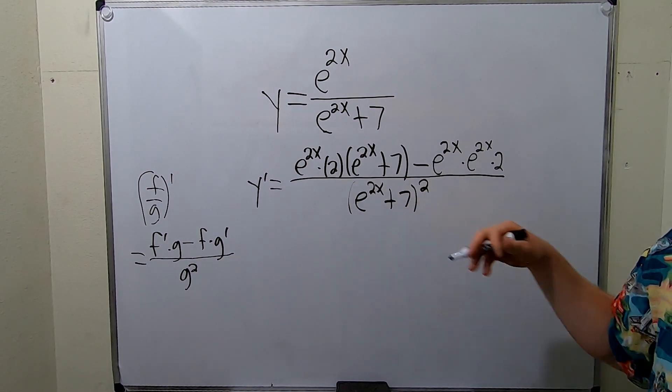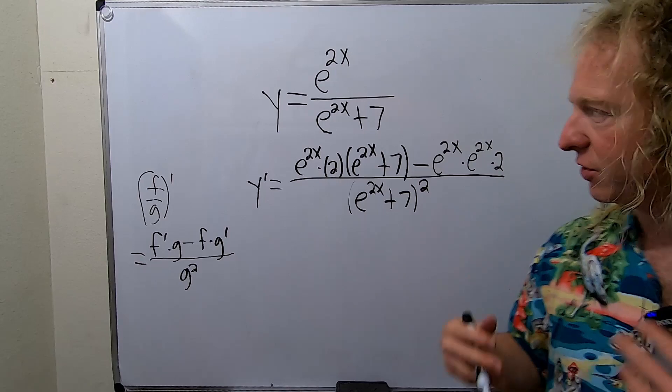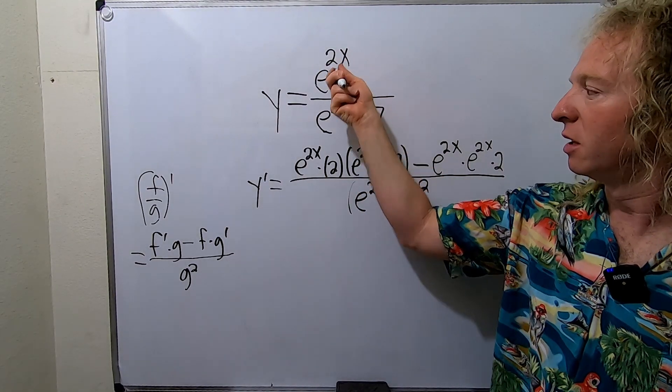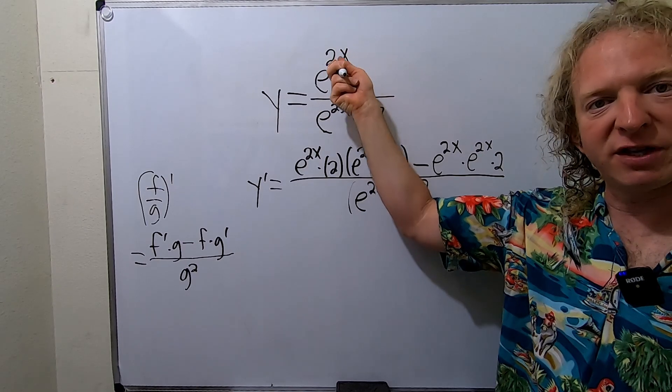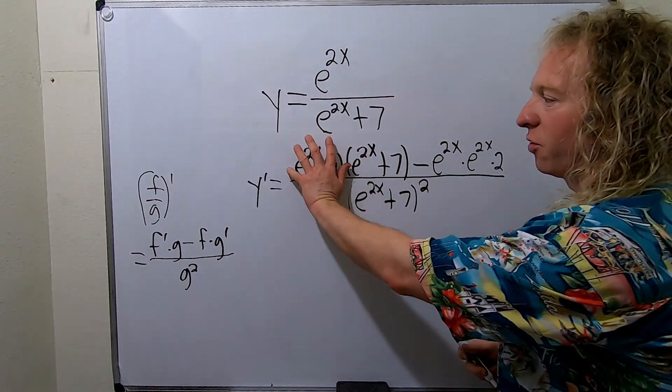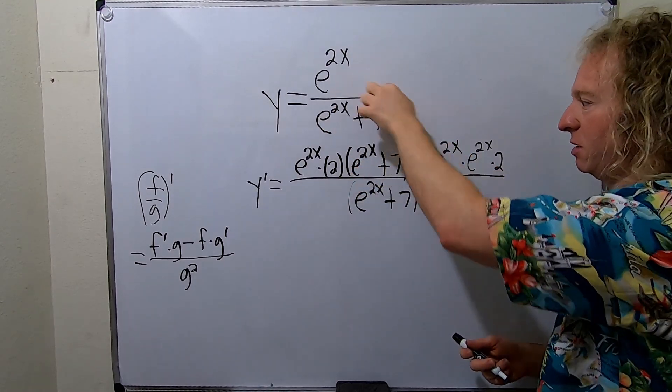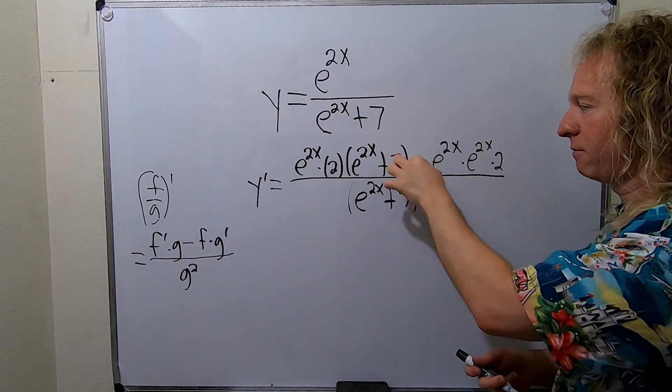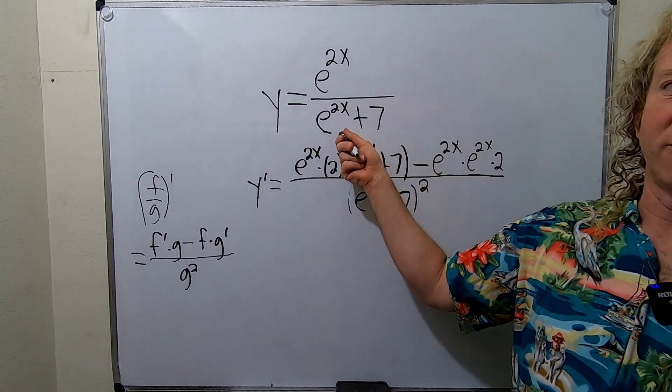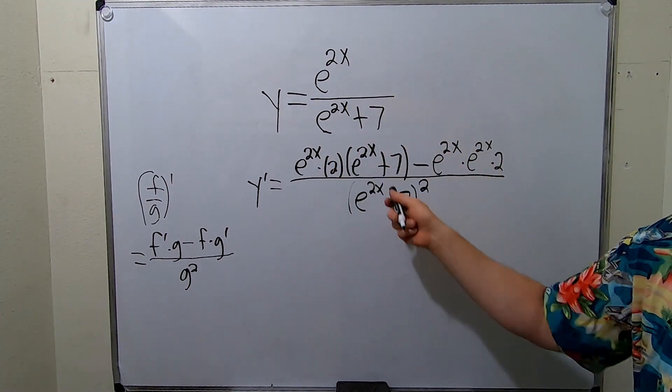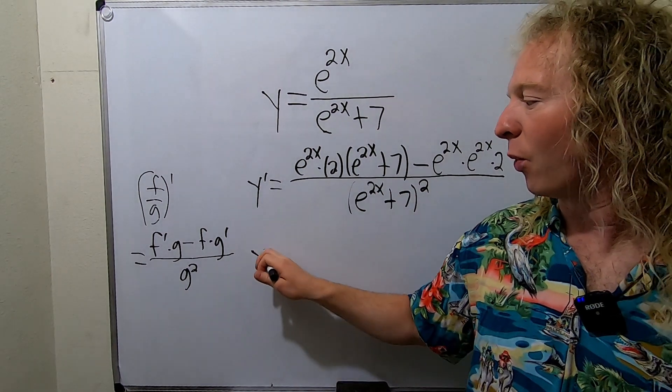Let me go over that again just to make sure it's right. So the derivative of the top piece is e to the 2x times the derivative of the inside, so 2. So this whole thing here is the derivative of the top times the bottom minus the top piece, times the bottom minus the top times the derivative of the bottom. So this derivative is e to the 2x times 2, and we're good to go. So y prime.